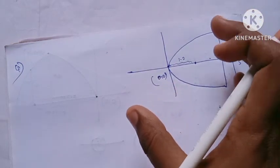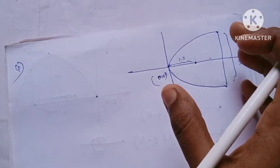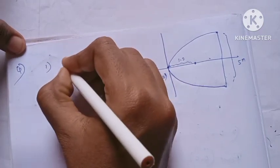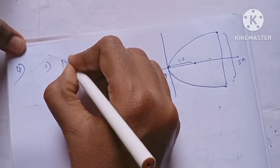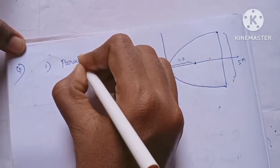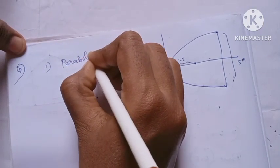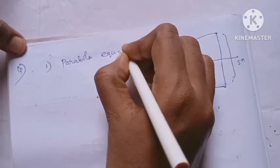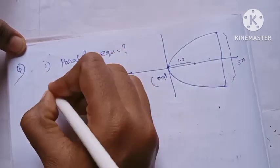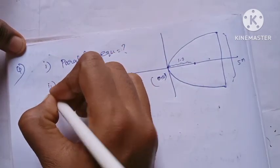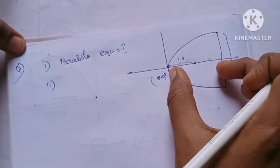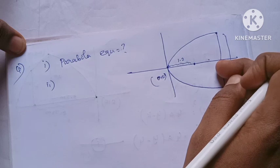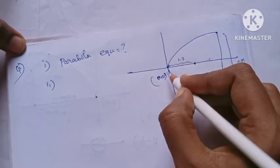So there are two questions. The first question is to find the equation of the parabola, and the second question is to find the depth of the satellite dish.